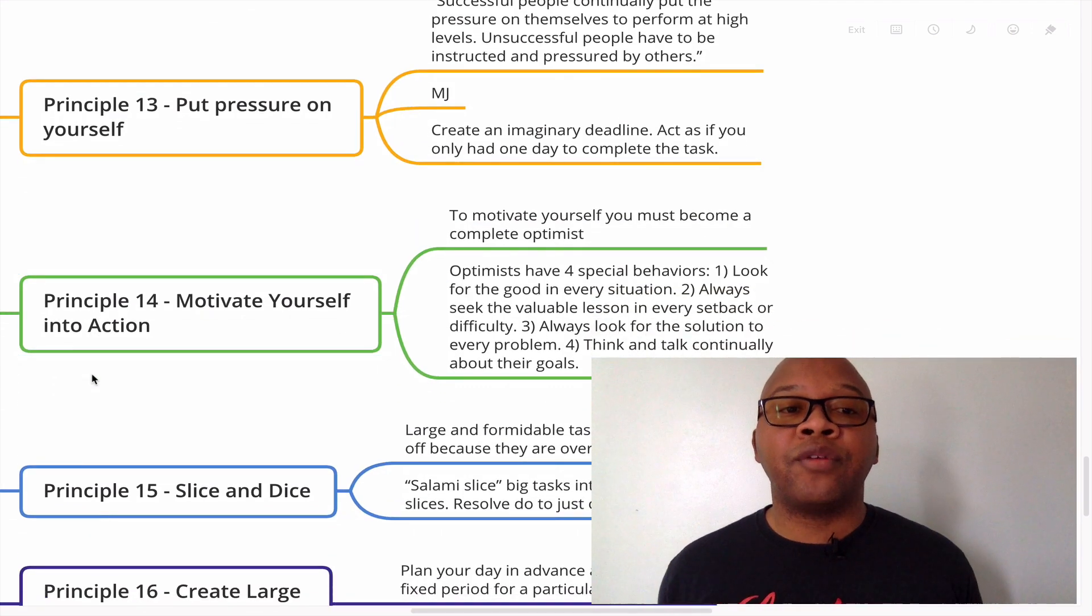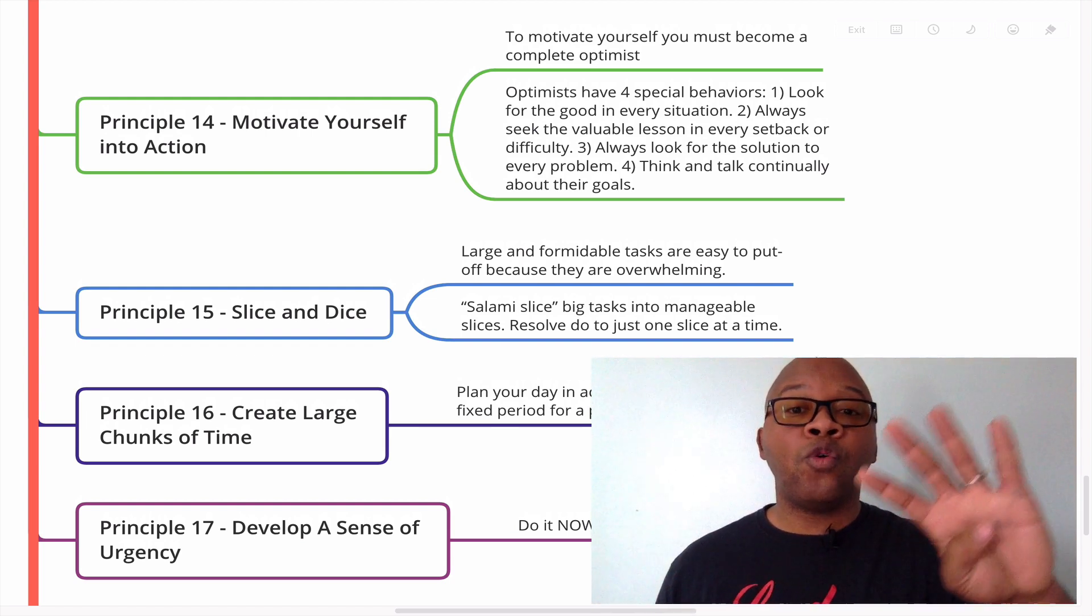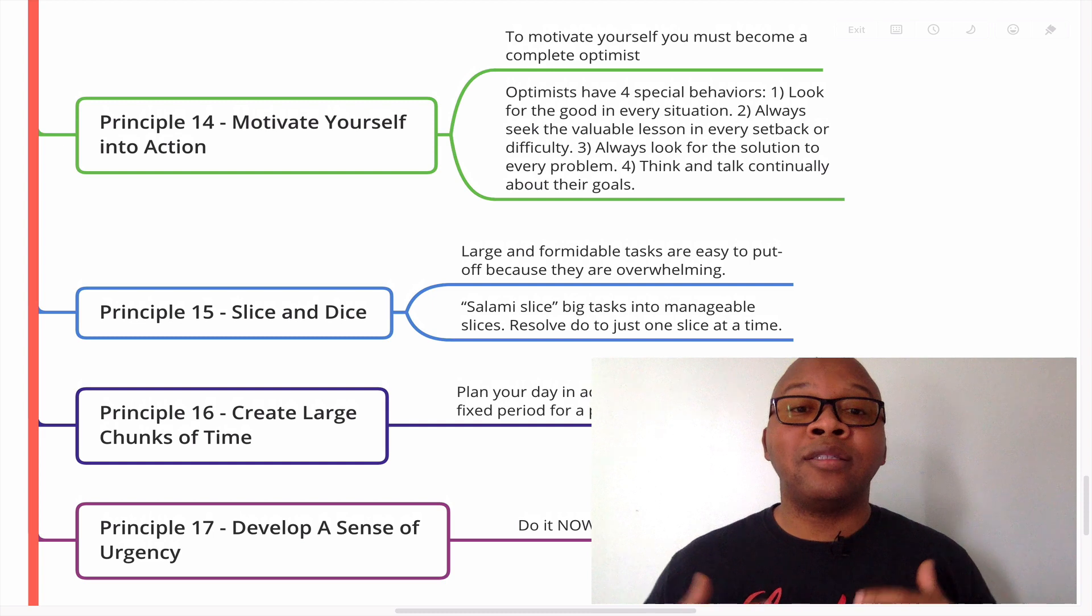Principle 14, motivate yourself into action. To motivate yourself, you must become a complete optimist. Optimists have four special behaviors. One, look for the good in every situation. Two, always seek the valuable lesson in every setback or difficulty. Three, always look for the solution to every problem. Four, think and talk continually about their goals.